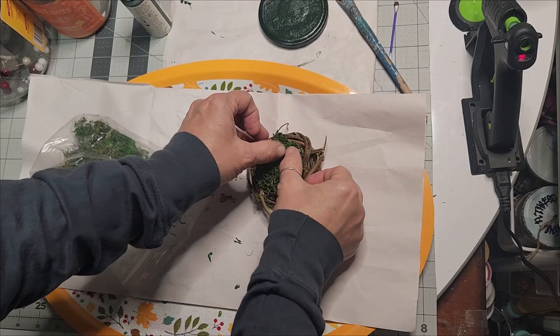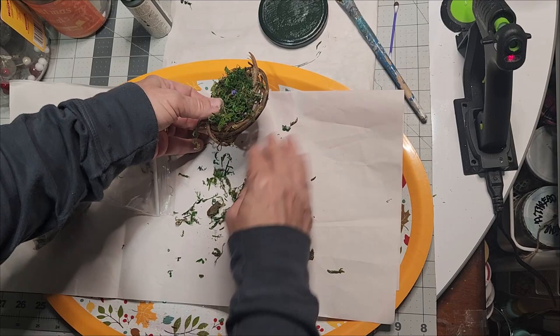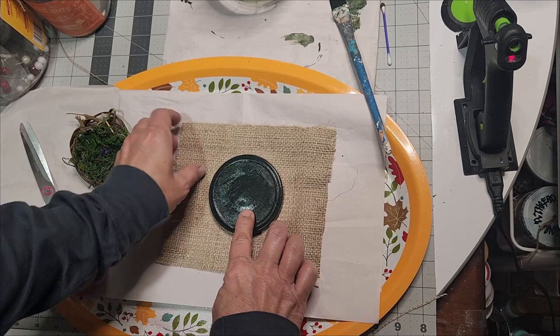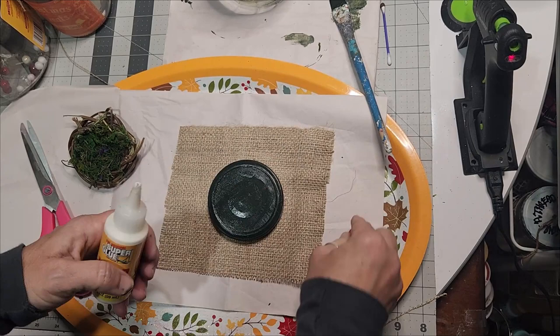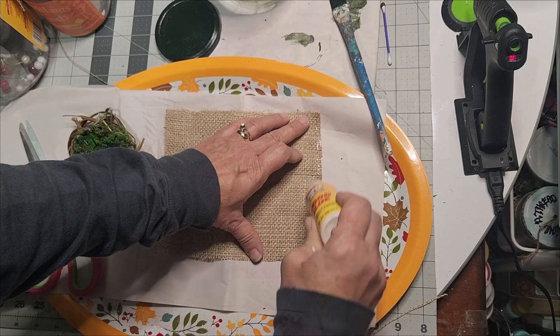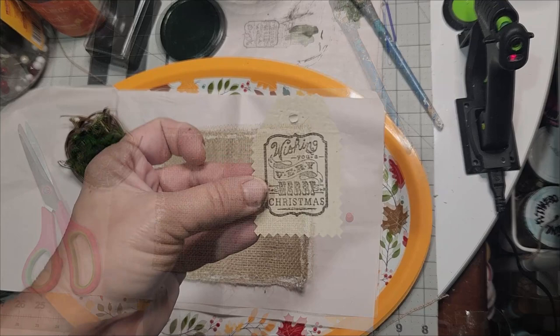Then I will take some of the moss and glue it in the bottom and create a bird's nest. Now this particular jar, we are making it for three times the use. So to create a stay put stitch or fray, use a little bit of glue. I'm just using some of the Dollar Tree wood glue.